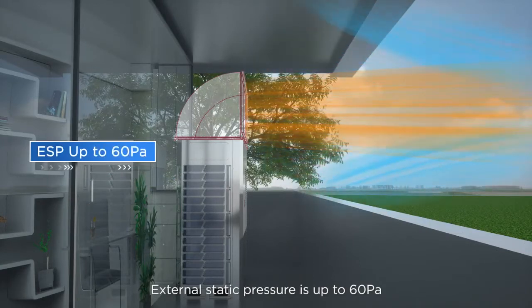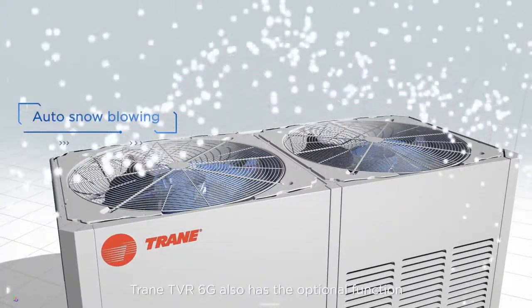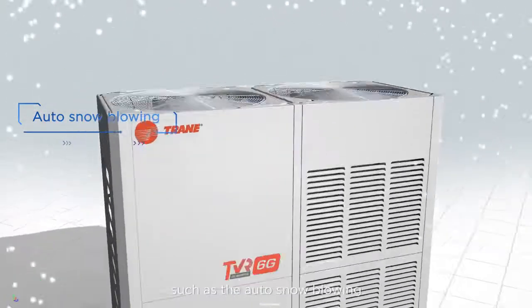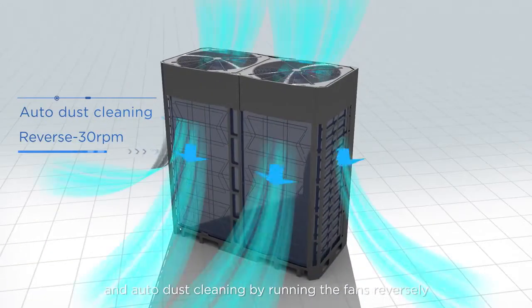External static pressure is up to 60 PA. TrainTVR 6G also has optional functions such as auto snow blowing and auto dust cleaning by running the fans reversely.